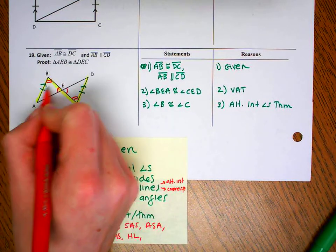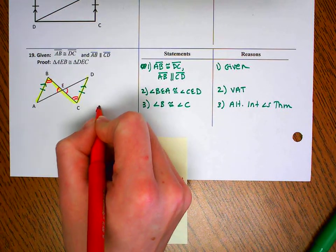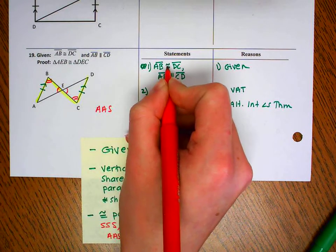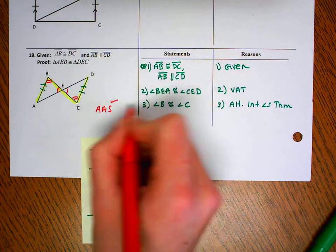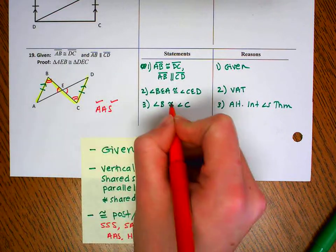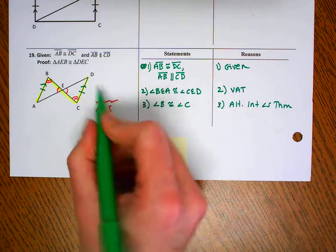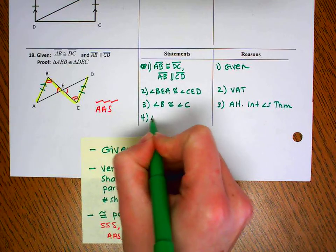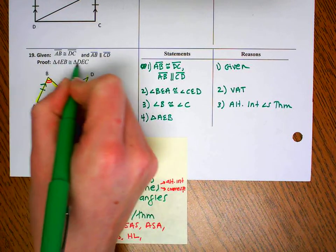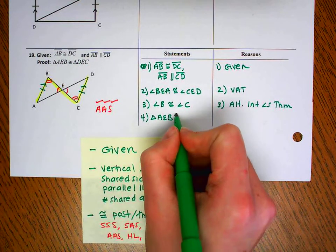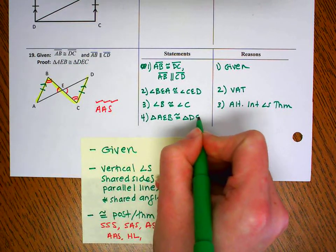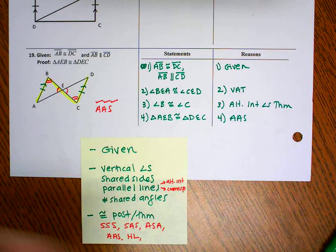Two angles, a side that's not directly in between. We call that non-included, so that's AAS. Pair of sides that are congruent. Sorry, parallel sides, that doesn't help us for our checklist. Congruent angles, congruent angles. We've got all three in our proof, so now I can say that my two triangles, which again I'm pulling just from here, so this is always the first statement, this is always the last statement. And they're congruent by AAS.